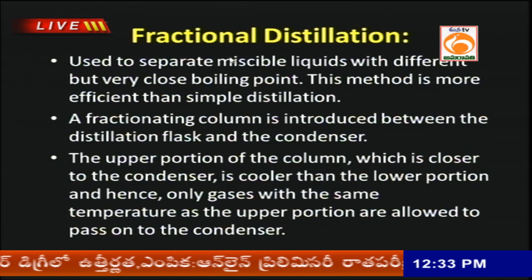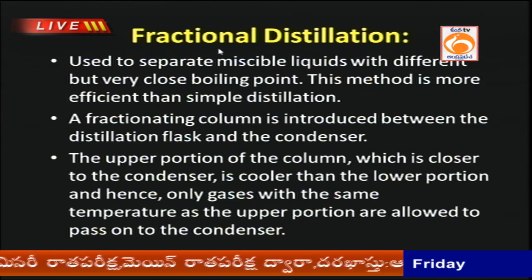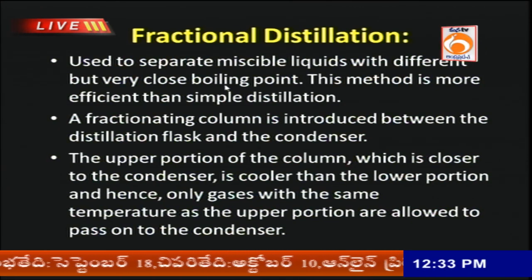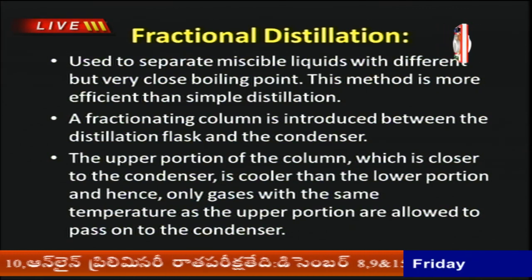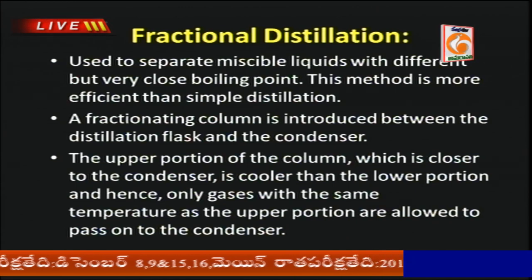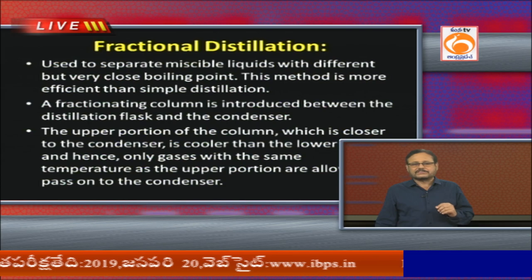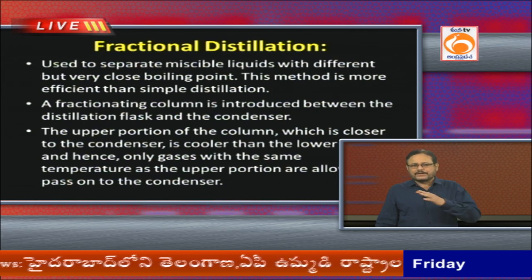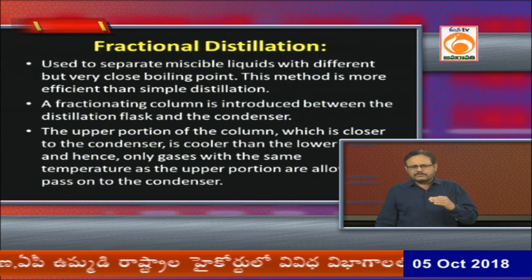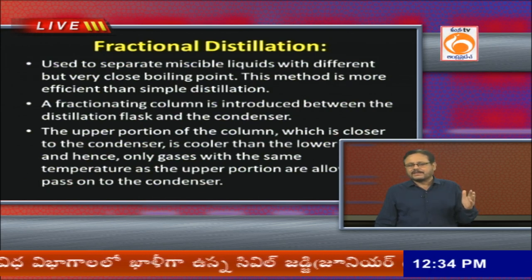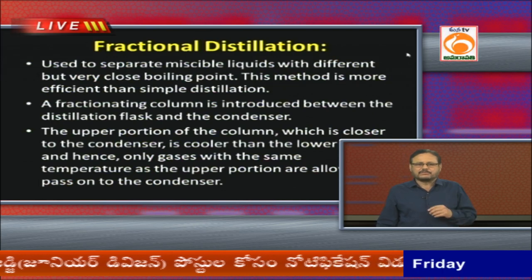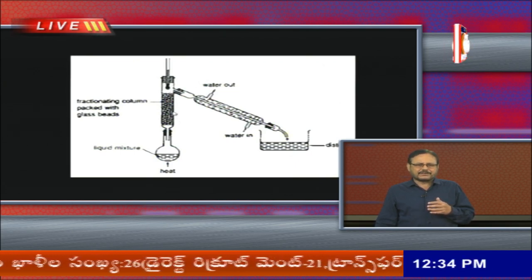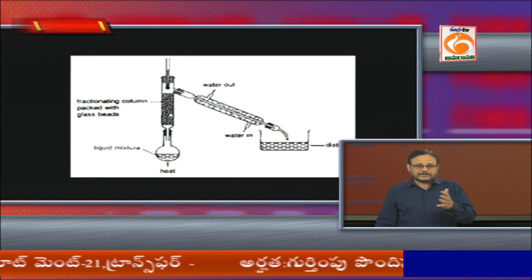Fractional distillation is widely used in industry on a large scale for separation of liquids whose boiling points differ by about 20°C. For example, to separate BTX — benzene, toluene, and xylene — whose boiling points differ by 10 to 15°C, fractional distillation is used. The instrument uses a fractionating column where the separation is performed.